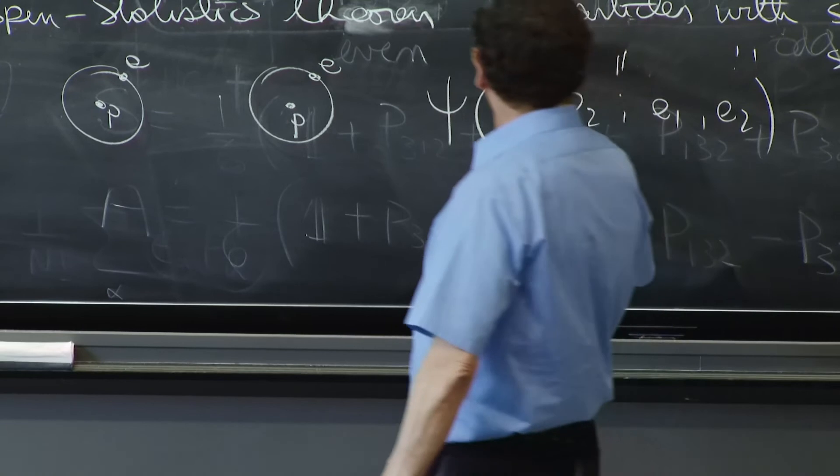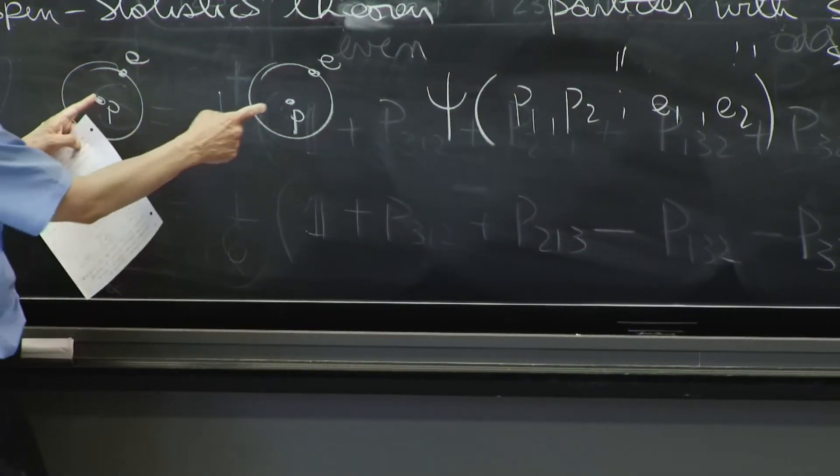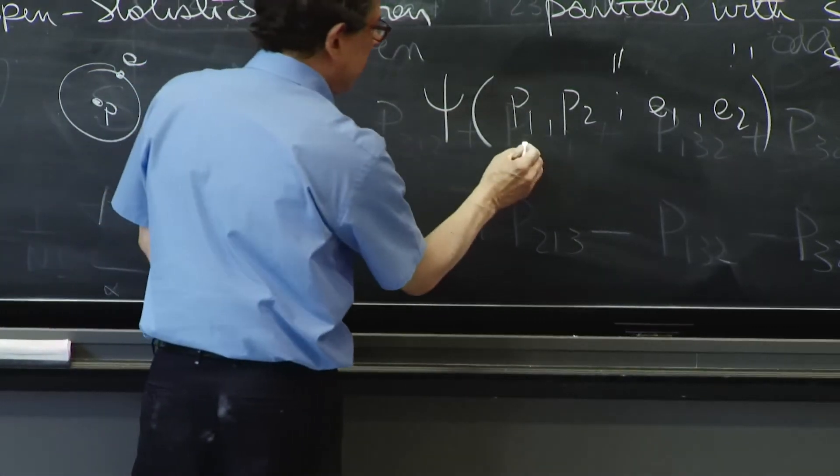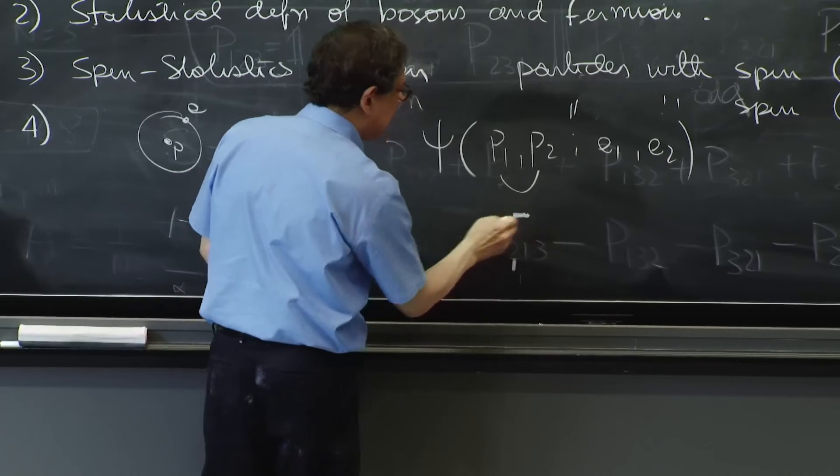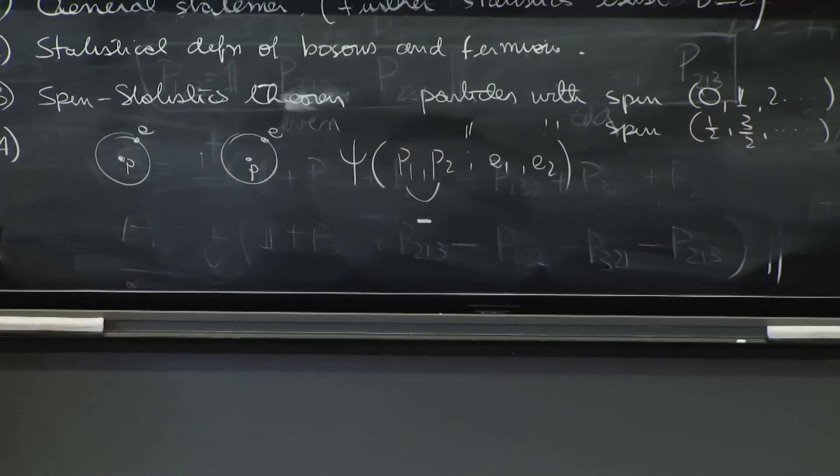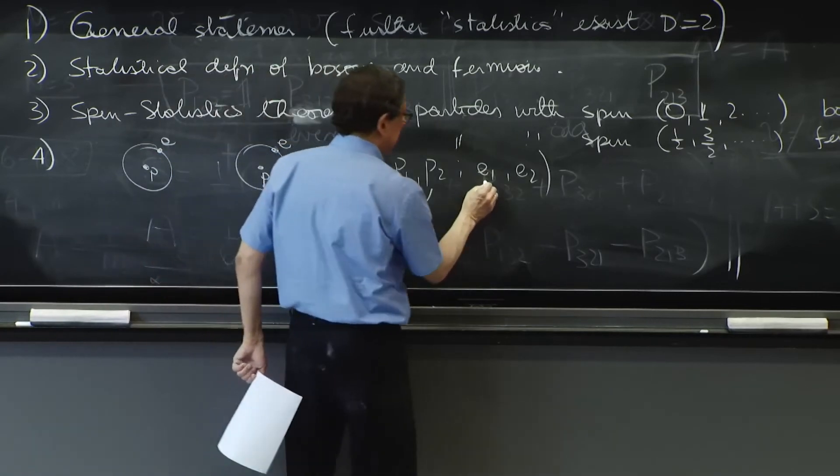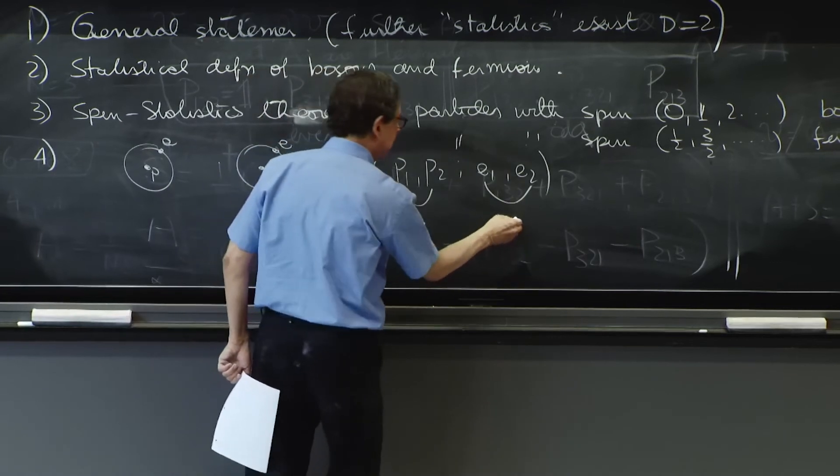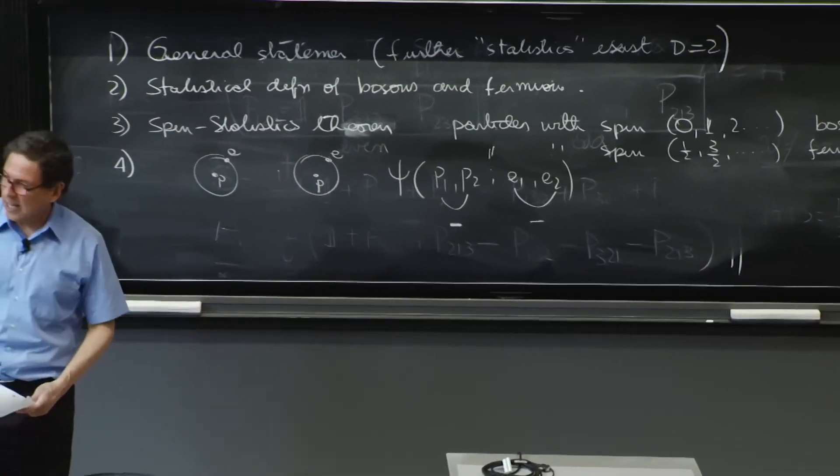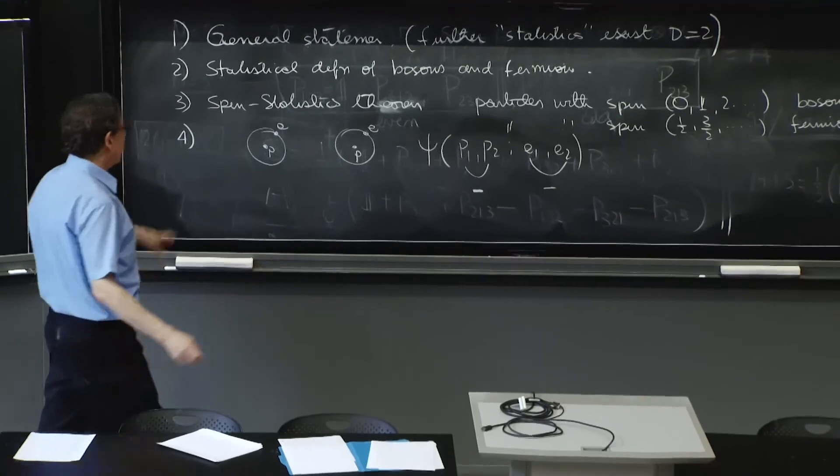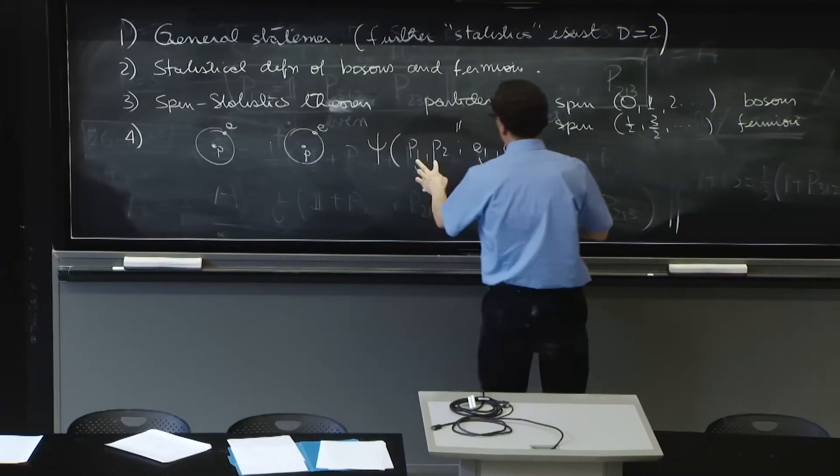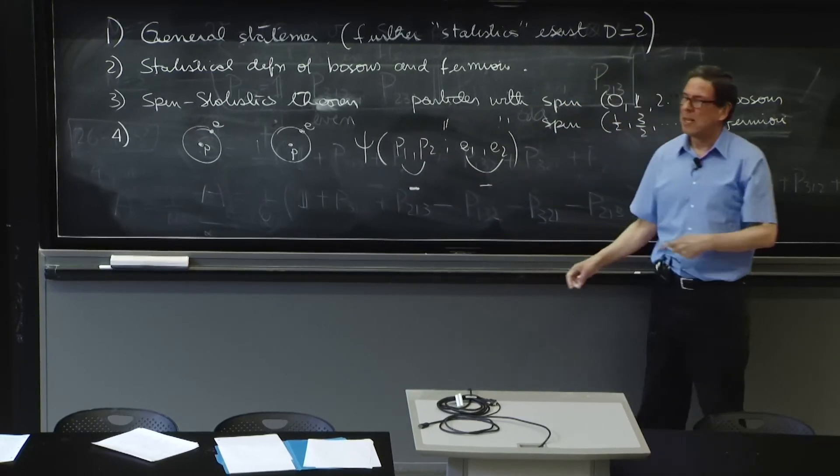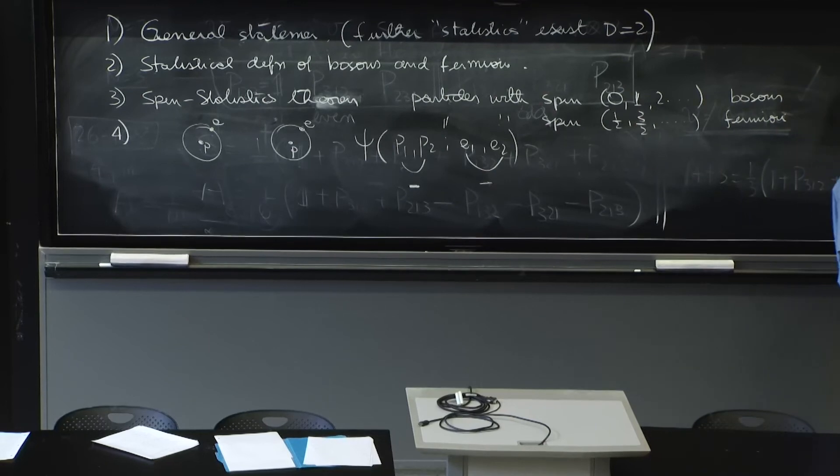Since protons are identical particles that are fermions, the wave function must change sign if P1 and P2 are exchanged. There would be a minus sign—it's antisymmetric. Since the electrons are fermions, it should be antisymmetric by exchanging these two. So it's also antisymmetric under this exchange. So finally, if you exchange this atom with this atom, you must exchange the two protons and the two electrons at the same time—two minuses, and you get a plus. Therefore, the hydrogen atom is a boson.